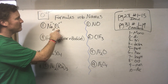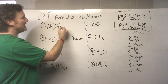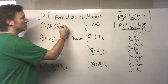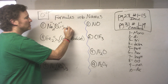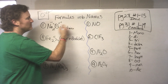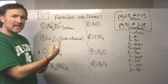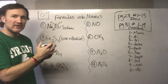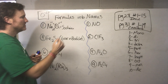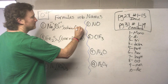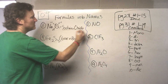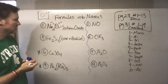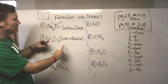When we name ionic materials, the first word always stays the same — sodium stays sodium. For the second element, if it's a single element you change the ending to '-ide.' So sodium and oxygen gives us sodium oxide as our answer for number one.